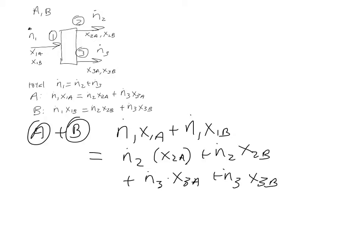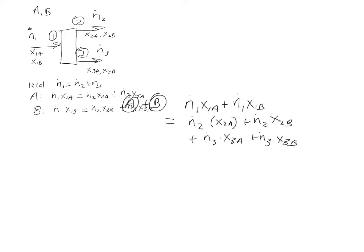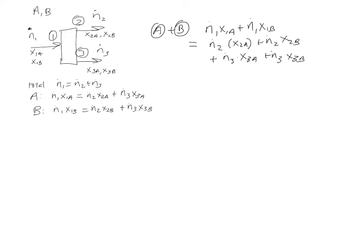So I just took equation A and equation B, and added them up. And if I just go ahead and use this relationship, x1A plus x1B is equal to 1, and then x2A plus x2B is equal to 1, x3A plus x3B is equal to 1.